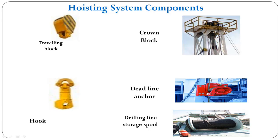One end of the drilling line at the deadline anchor goes upward to the crown block, whereas the other end — the lowering end — goes to the drilling line storage spool. This storage spool has extra line stored on it that we will use in case we need to slip and cut the drilling line from the drawworks end.